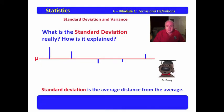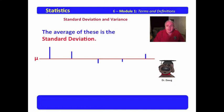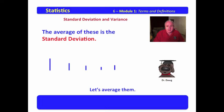Then we would take these distances and average those distances, because the standard deviation is the average distance of the data from the mean. Let's average these data.